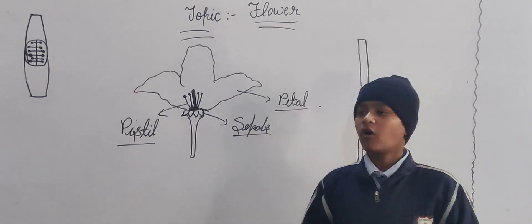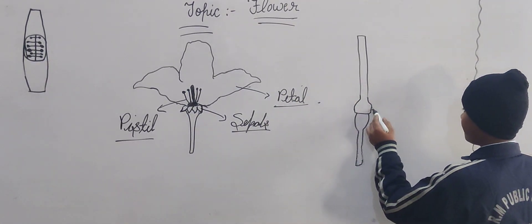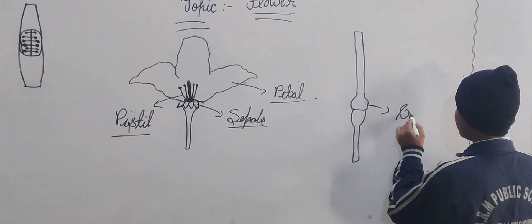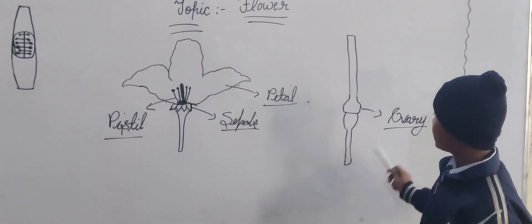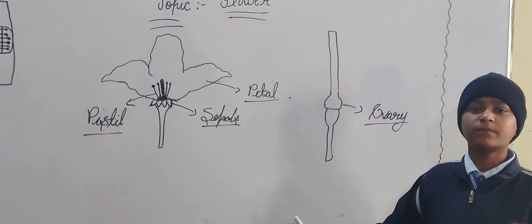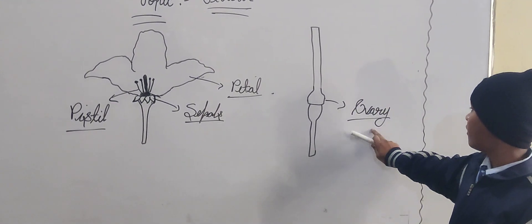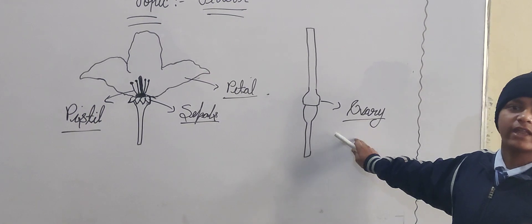Next part is ovary. This is ovary. The innermost part inside the pistil is called ovary.